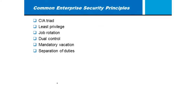Some common security principles: the first is called the CIA triad. The C stands for confidentiality — that can be a lot of different things: the encryption of data, the place where we store the data, or the policies and permissions we apply to the asset we're trying to keep safe. We draw it as a triangle because we're looking at three components around an asset we want to protect.